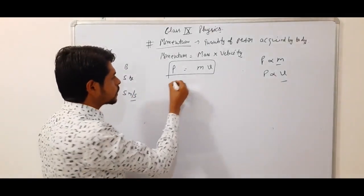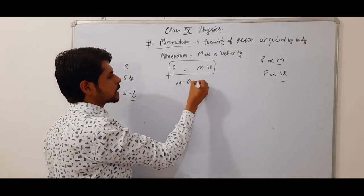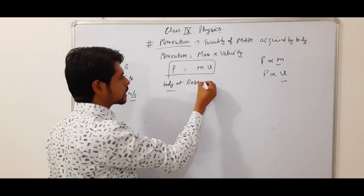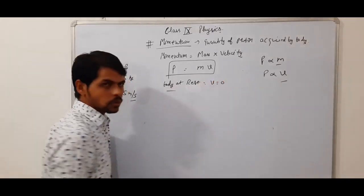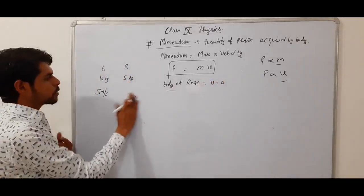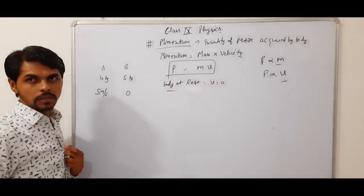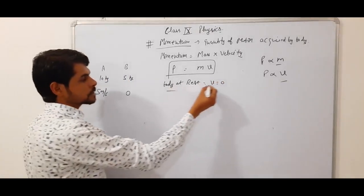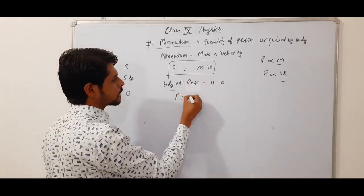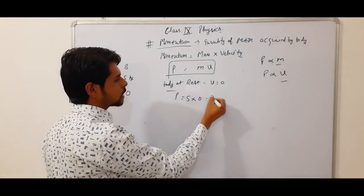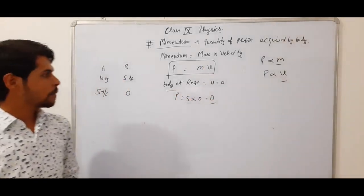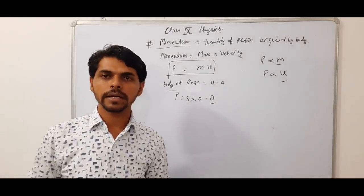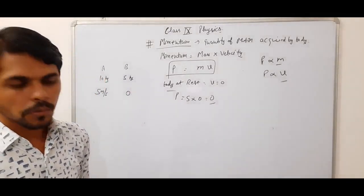But if a body is at rest, then what about its velocity? Velocity will be zero. It has some mass — suppose 5 kg — lekin velocity zero hai. So momentum equals mass into velocity equals 5 into 0 equals zero. A body at rest will have zero momentum.